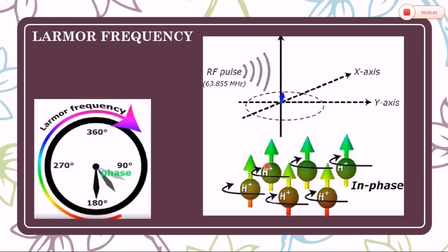The second one is precession of its axis of rotation about the direction of the external magnetic field, which is the vertical gravitational field.